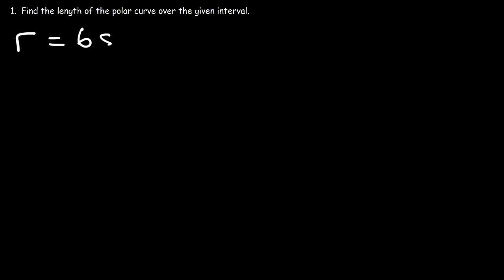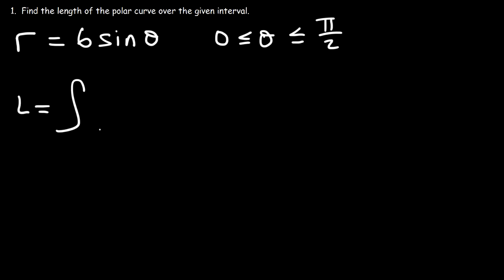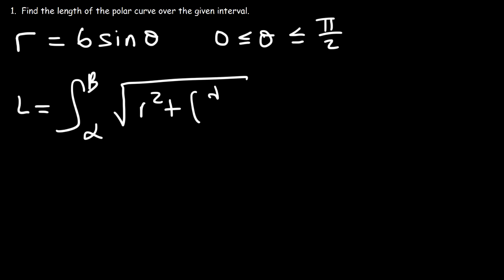Let's say that r is equal to 6 sine theta, and our goal is to find the length of the polar curve over the interval where theta is between 0 and pi over 2. The arc length formula is the integral from alpha to beta of the square root of r squared plus (dr/dθ)² dθ.